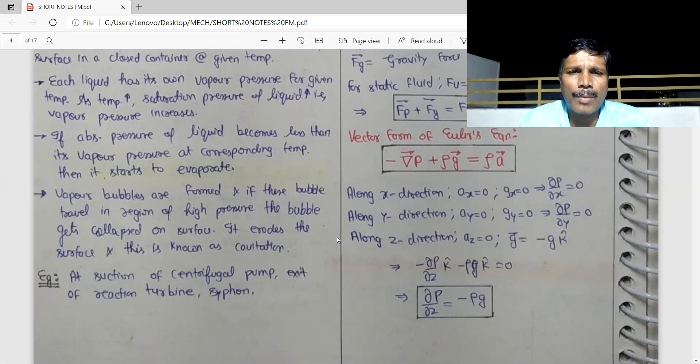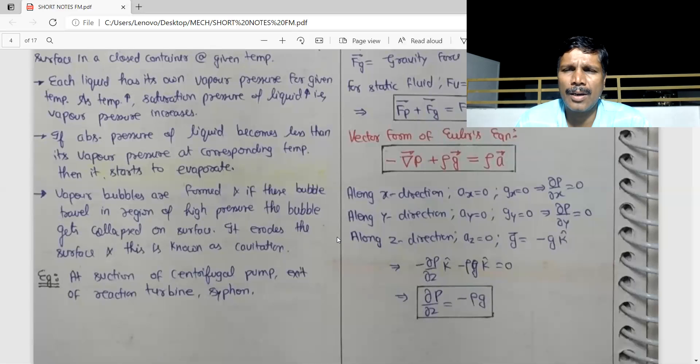Vapor bubble is formed. When you travel in the region of high pressure, it will collapse. Then the formation of bubbles will take place, then the collapsing of the bubbles will take place. It will burst. It will burst on the surface. It will create noise. Then pitting will be created. This is cavitation, the formation and collapse of vapor bubbles.